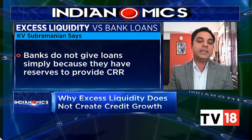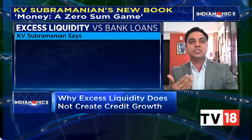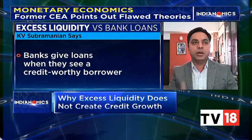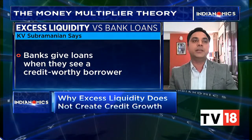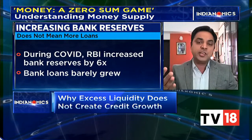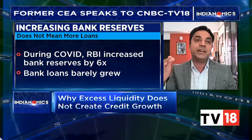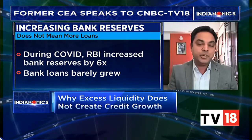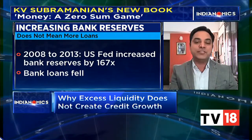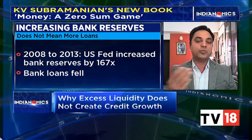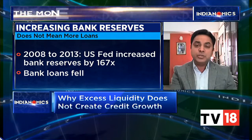Now look at the evidence. During the global financial crisis, reserves in the United States increased from $15 million in December 2007 to about $2.5 billion in December 2013 — over a six-year period, reserves increased 170 times. What happened to bank loans? Bank loans actually declined, from $8 trillion to $7 trillion. So that tells you again this is basically not working.